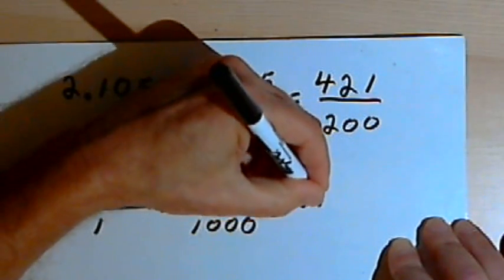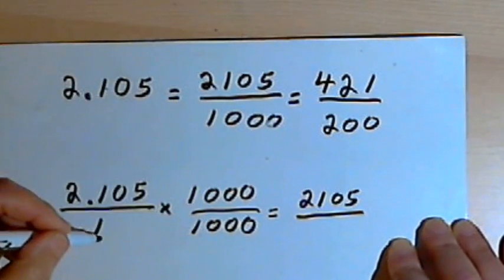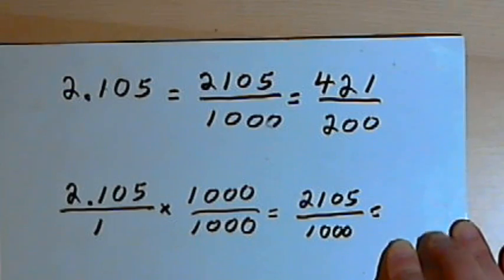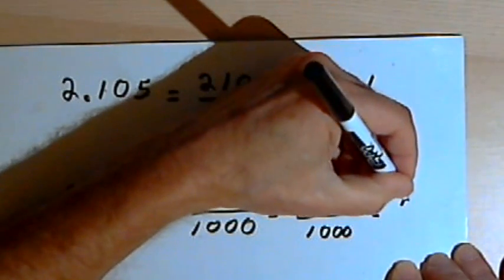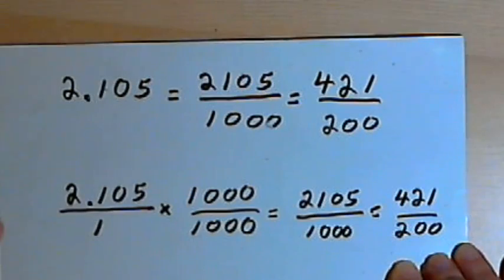I get 2105. That's my numerator. The denominator is going to be 1,000. And once again, I could reduce this number to 421 over 200.